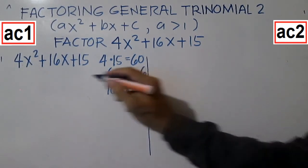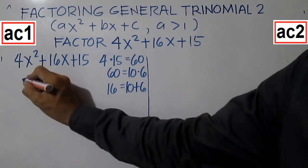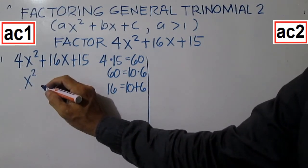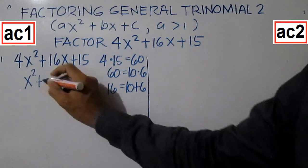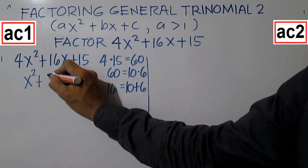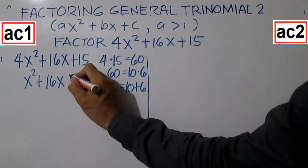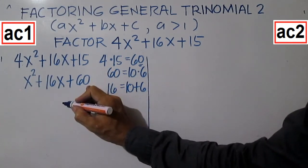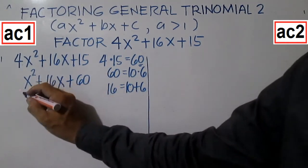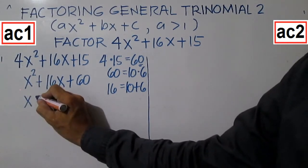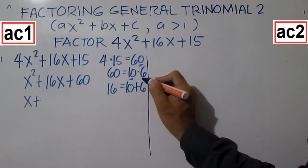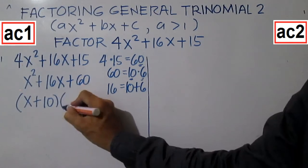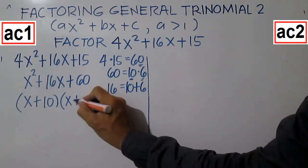We're going to use these numbers as we go along. Next, divide the first term by its coefficient: 4X squared divided by 4 is X squared. Copy the second term, 16X, and replace C by the product of A and C, giving X squared plus 16X plus 60. Then factor to get X plus 10 times X plus 6.